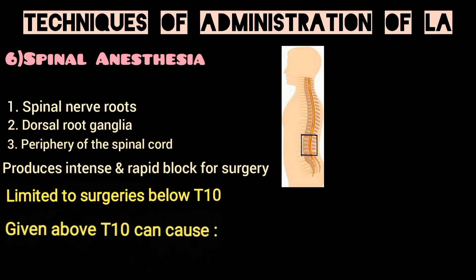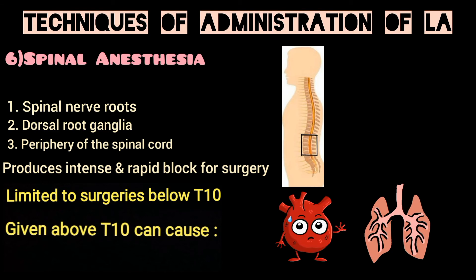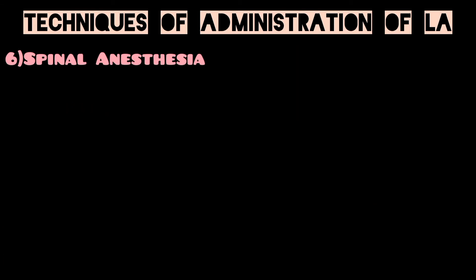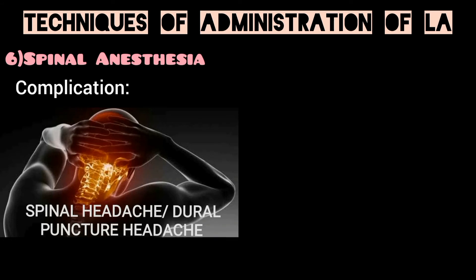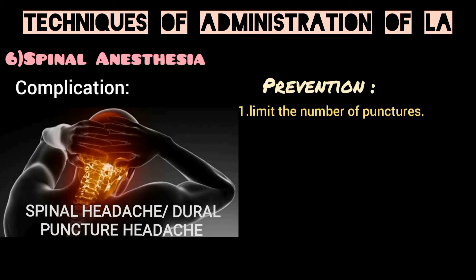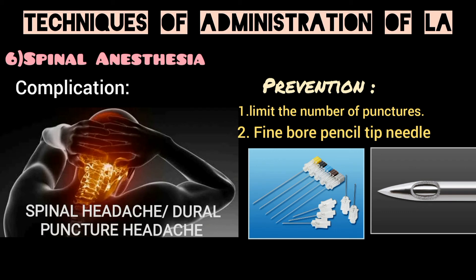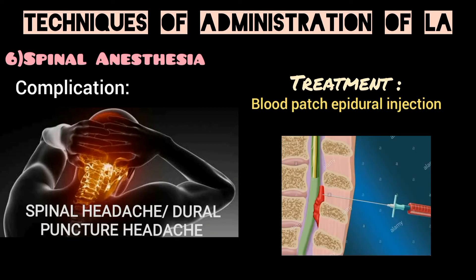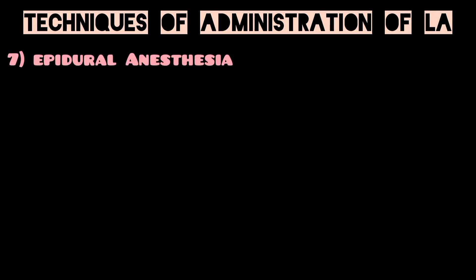Spinal anesthesia is usually limited to surgeries below the level of T10, because if the level of block is above T10, severe hypotension and ventilatory failure may occur. A very common complication is spinal headache or dural puncture headache, due to leakage of spinal fluid. It can be minimized by limiting the number of punctures and using a fine-bore pencil-tip needle, designed to split rather than cut the dura. If it does occur, it can be treated with a blood patch epidural injection — injecting 5 to 10 ml of the patient's blood into the epidural space at the site of the previous puncture to plug the CSF leak.